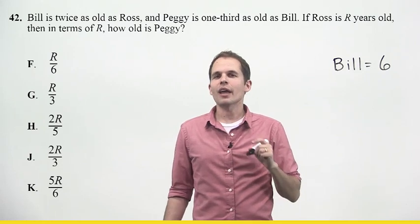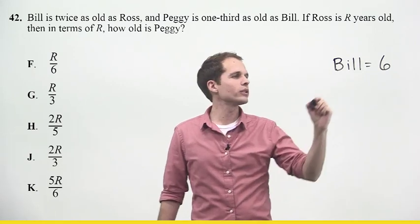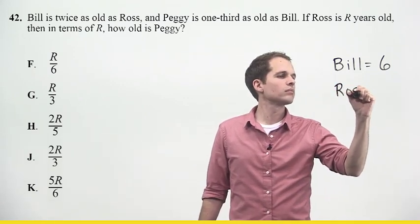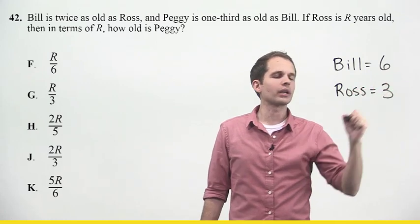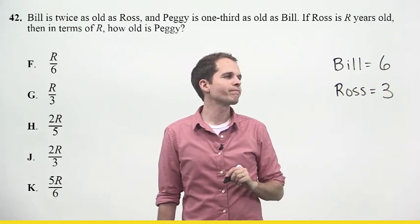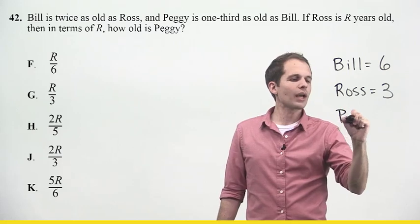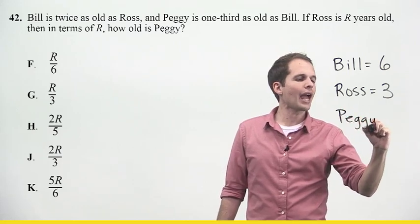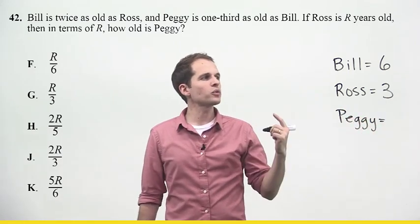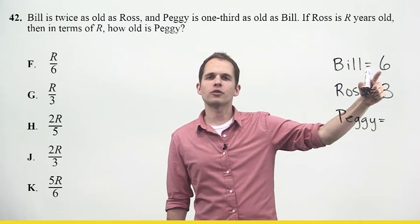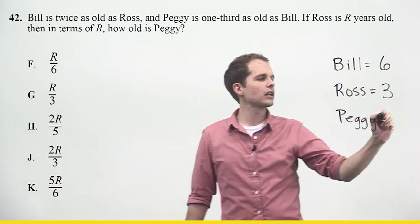If Bill is six and Ross is half of that, then how old is Ross? Ross would have to be three because Bill is twice as old. The question also says Peggy is one-third as old as Bill. So what's one-third of Bill's age? Well, one-third of six is two.